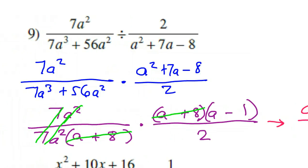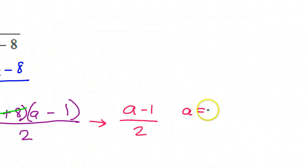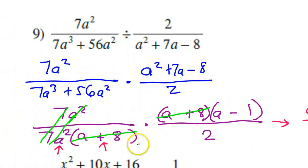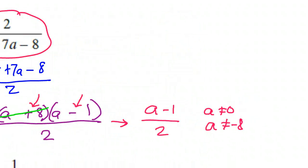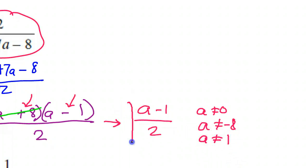Time for the restrictions. From the first fraction, a cannot equal negative 8. Also I have a restriction from the a squared term: a cannot equal 0 and a cannot equal negative 8. Now remember, this fraction came from the original division, so neither the numerator nor the denominator is allowed to be 0. Because of (a plus 8), a cannot equal negative 8, and because of (a minus 1), a cannot equal positive 1. So we have three restrictions on that one.